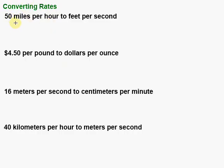I'm going to start by writing this as a ratio. Remember, a ratio is really just a fraction. It's 50 miles — and 'per' suggests division, so that's where we get that fraction piece — per hour. So 50 miles in one hour. Then we're going to creatively multiply by one in order to make that conversion into feet per second. What do I mean by multiply by one?